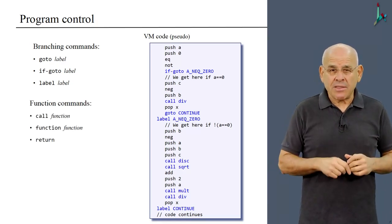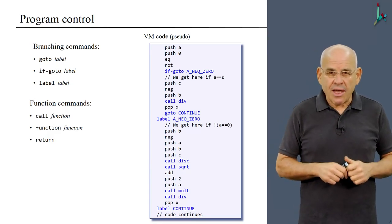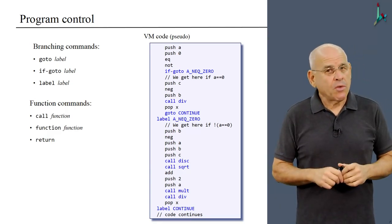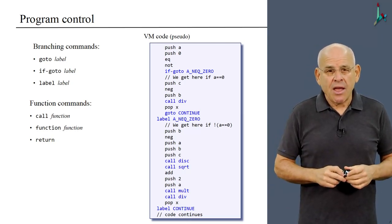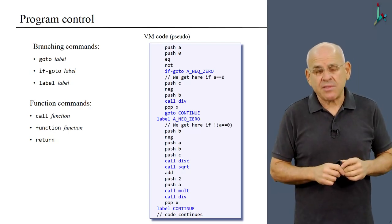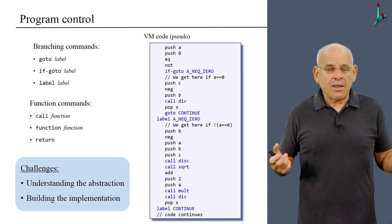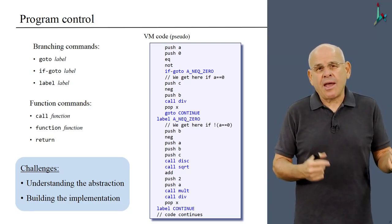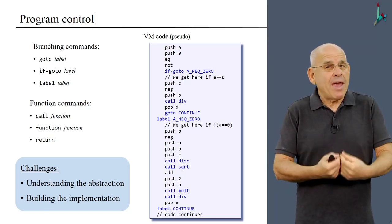And function commands, which boil down to call, function, and return. So this, in a nutshell, is what we are going to do in this module. We are going to discuss these commands, and we're going to discuss them from two different perspectives. One of them will be understanding the abstraction. That is, we have to understand how to do branching and function call and return within the VM language.